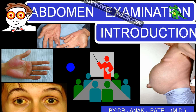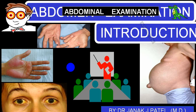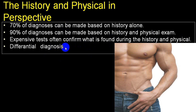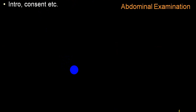We'll be covering those in separate parts. Today we'll be talking on introduction. It is said that 70% of the diagnosis can be made just by history alone, and 90% of the diagnosis can be made by history and physical examination. Expensive tests often confirm what is found during history and physical examination. So just by doing a good history and good physical examination you can come closest to the differential diagnosis.